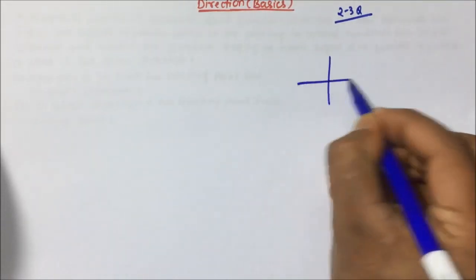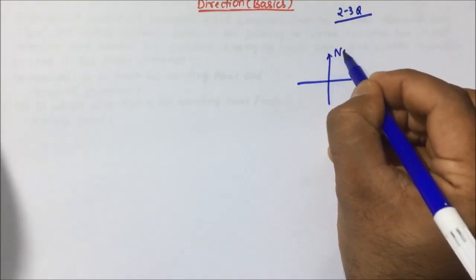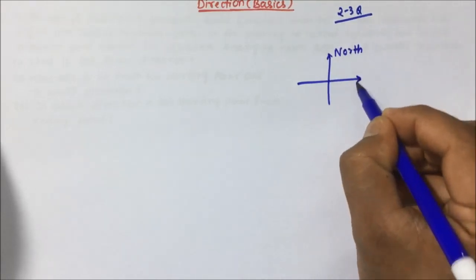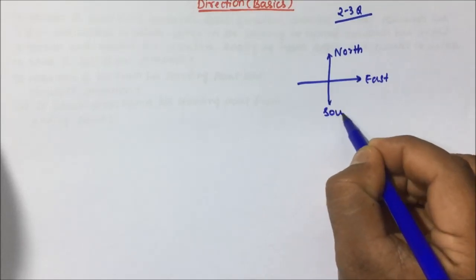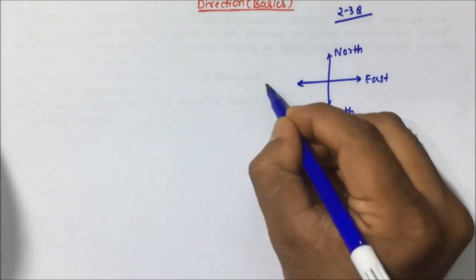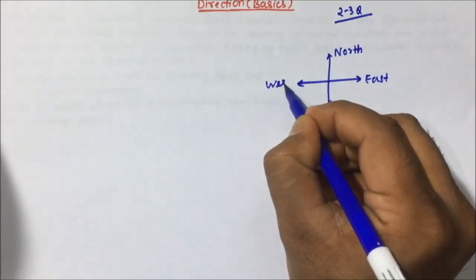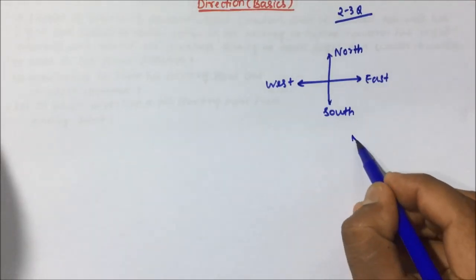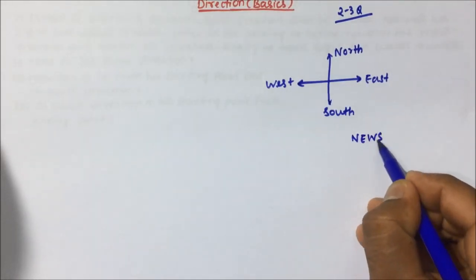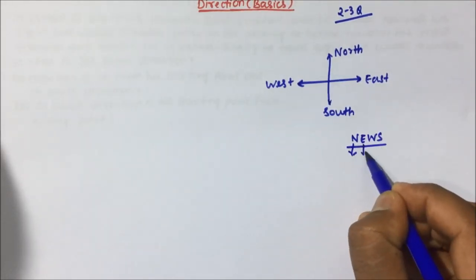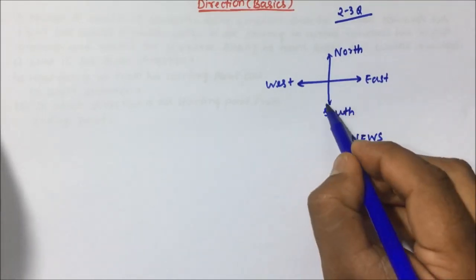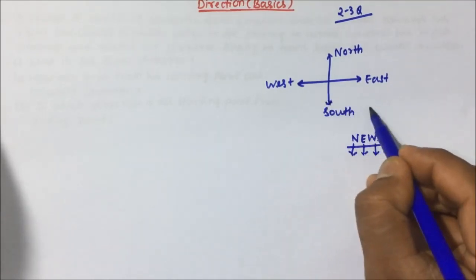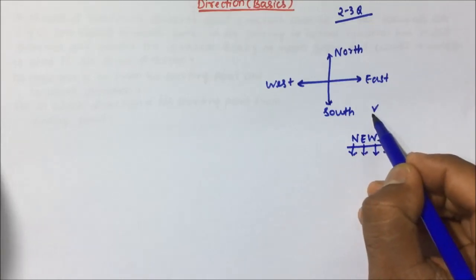So what is the concept in direction? Direction will have north, then east, then south, and then west. Basically this is nothing but the full form of NEWS — N for north, E for east, W for west, and S for south. So in direction also, all four directions are there.